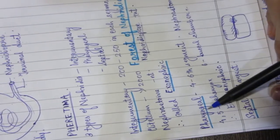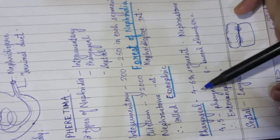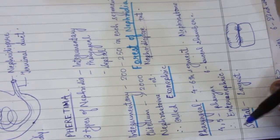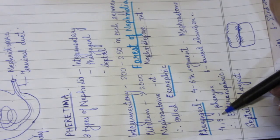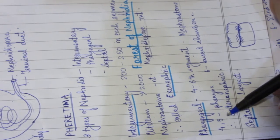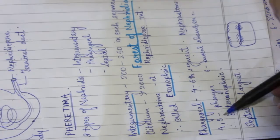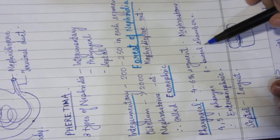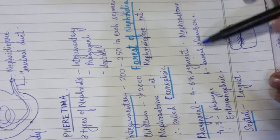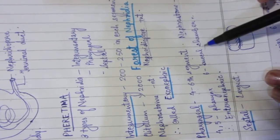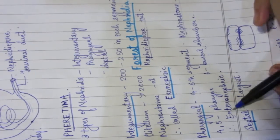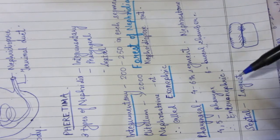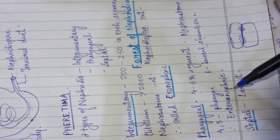Next is our pharyngeal nephridia, present only in the 4th to 6th segments. The nephrostome is also absent here. In the 4th and 5th segments, the duct opens into the pharynx, and the 6th segment duct opens into the buccal chamber. Since the pharynx and buccal chamber are part of the digestive system, this is called enteronephric — because enteron means gut.